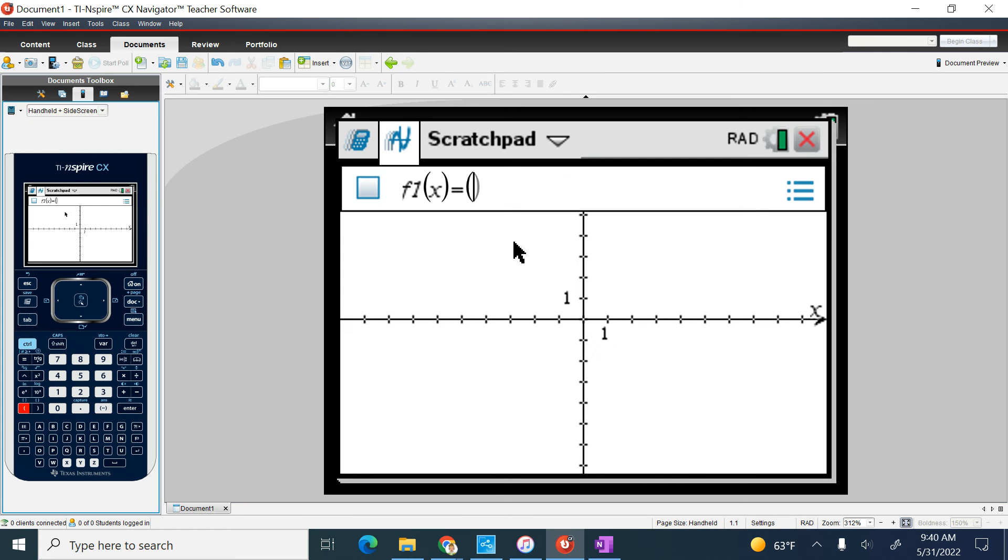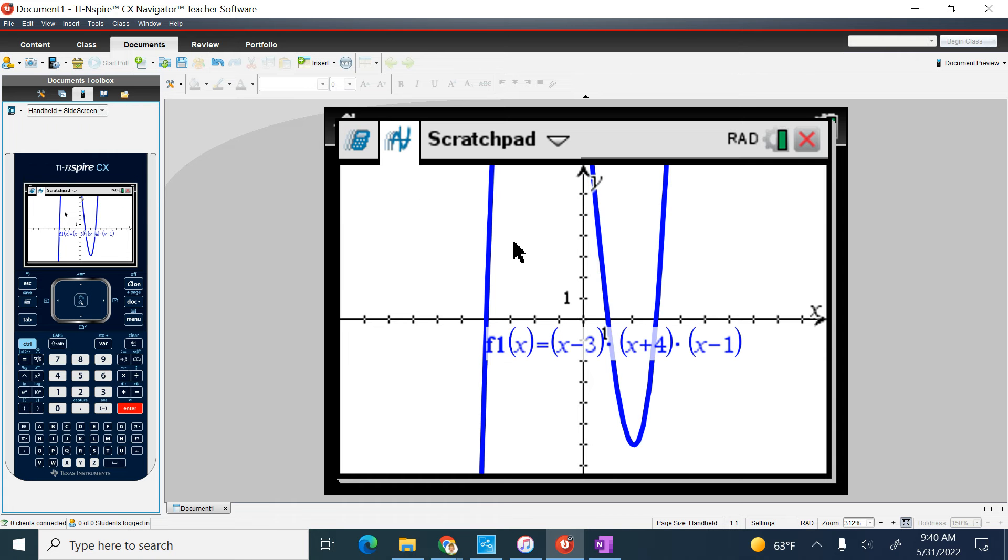So I'm going to type in x minus 3 parentheses times x plus 4 times x minus 1. So that's the function I'm going to get. I need to find my max and my min.